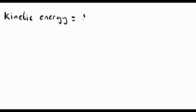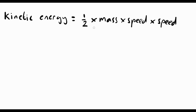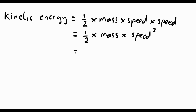Kinetic energy is the energy that something has because it is moving. The equation is like this: the kinetic energy of a moving object is equal to a half multiplied by the mass of the object, multiplied by the speed of the object squared. To write that more clearly, it's equal to half times the mass of the object times speed squared. In symbols, kinetic energy — E subscript k — equals a half m v squared.